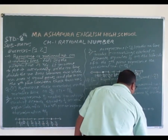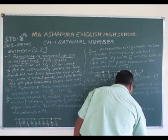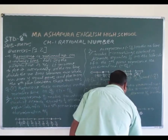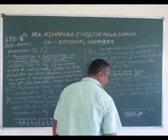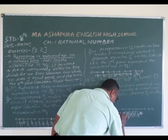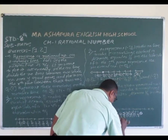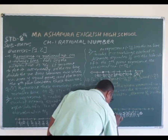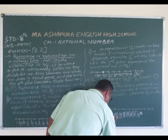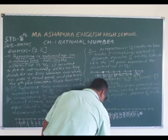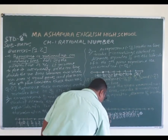So: minus 1 by 11, minus 2 by 11, minus 3 by 11, minus 4 by 11, minus 5 by 11, minus 6 by 11, minus 7 by 11, minus 8 by 11, minus 9 by 11, minus 10 by 11, and minus 11 by 11.